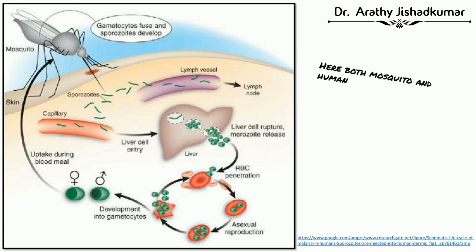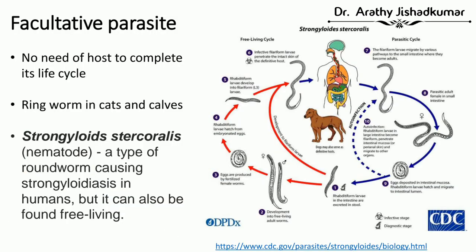The second is facultative parasite. These parasites do not require a host to complete their life cycle. For example, ringworm in cats and calves. There is also a nematode species that can either live as a free-living nematode or go through a host. Even without a host, it can complete its life cycle. These parasites that don't require any host are called facultative parasites.